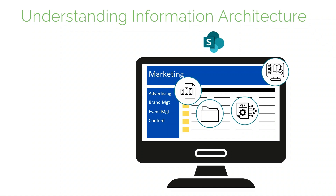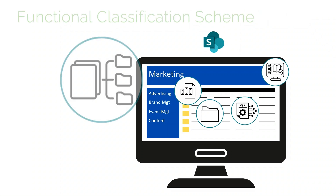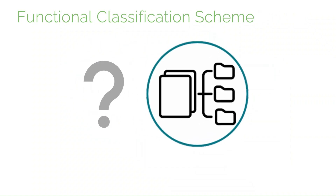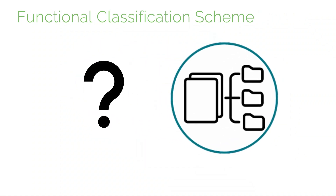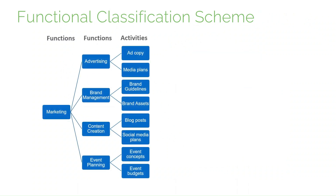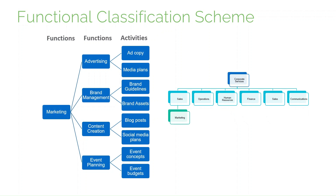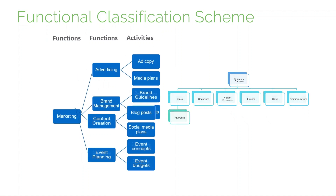To illustrate these concepts, we are going to use the example of a marketing department. We will use what is known as a functional classification scheme to organise the marketing department's documents. A functional classification scheme organises information based on what the organisation does — its functions and activities — rather than its structure, which in organisations can change. This ensures easier document retrieval regardless of restructuring.